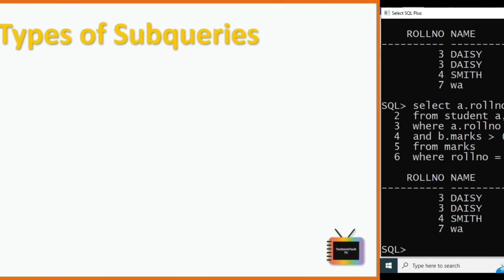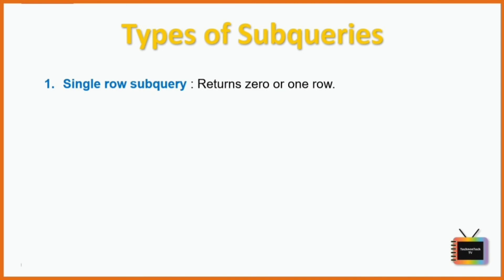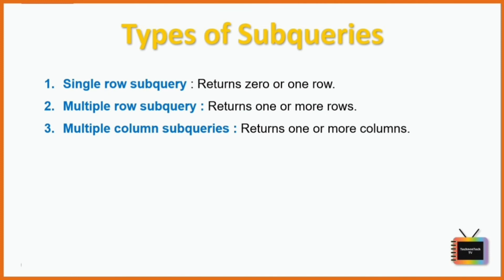Now let's see the types of subqueries. There are five types. First is a single-row subquery, which returns zero or one row. Next is a multiple-row subquery, which returns one or more rows. And next is a multiple-column subquery, which returns one or more columns.